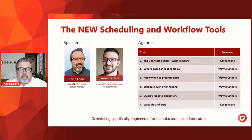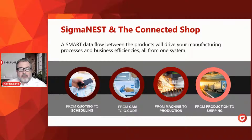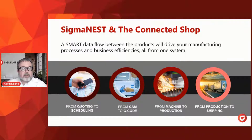My name is Kevin Keen and I am the product strategy manager for the Sigma Nest product family. Our main speaker today is Wayne Cathers and he's the product owner for our business systems division. At Sigma Nest, we want to do more than just help you get the best nest and drive your cutting machines. We're also dedicated to providing our customers with a full package solution to drive your business, all the way from the quoting stage through the end of the production process.